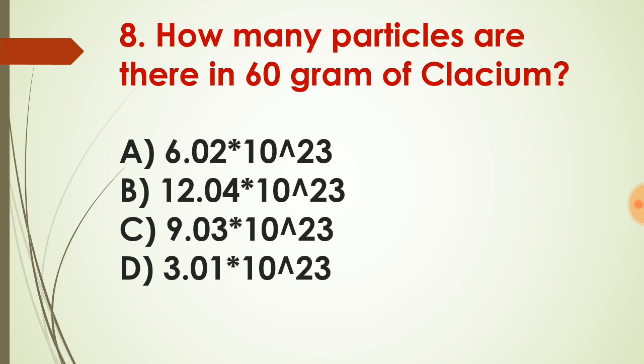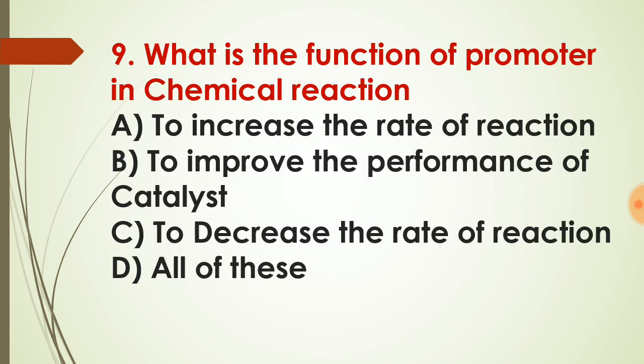One mole means 6.023 × 10²³ number of particles. Question number nine: what is the function of a promoter in a chemical reaction? Options include: to increase the rate of reaction, to improve the performance of catalyst, to decrease the rate of reaction, or all of these. The positive catalyst increases the rate of reaction and the negative catalyst decreases it. But the function of a promoter is to improve the performance of the catalyst. So the correct answer for question number nine is: to improve the performance of the catalyst.